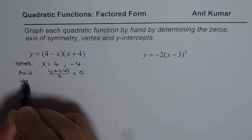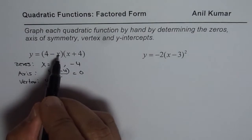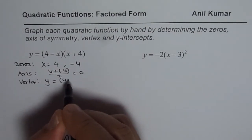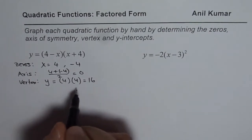As far as the vertex is concerned, vertex will be y equals to, substitute 0 here, so you get 4 times 4, which is indeed 16. So that is your vertex.